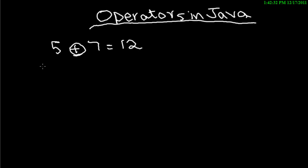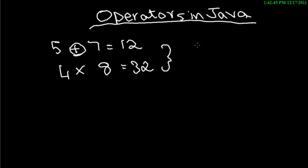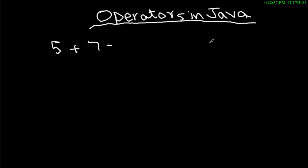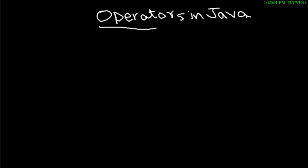Similarly in Java, four times eight is 32. But to write these things in Java you have special symbols — for example, you don't write multiplication with an 'x', you write it in a different way, which I'll show you.